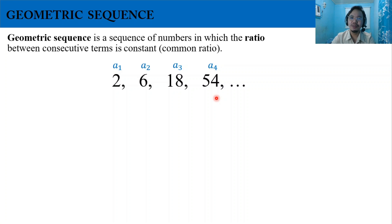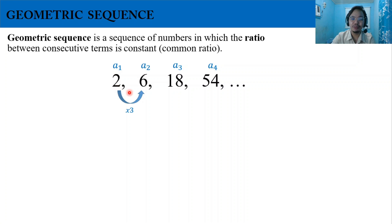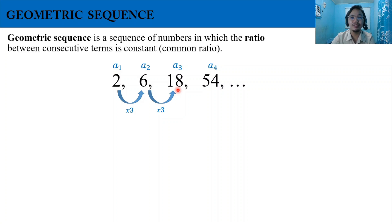If we multiply our first term by a specific number — let's say 3 — then 2 times 3 gives us the second term, which is 6. Multiplying 6 by 3 gives the third term, 18. Then multiplying 18 by 3 gives the fourth term, 54.